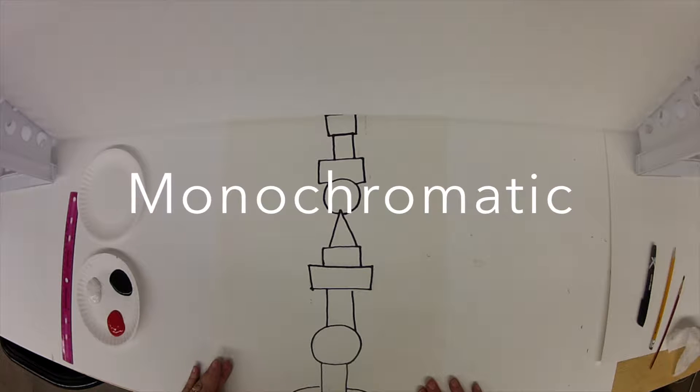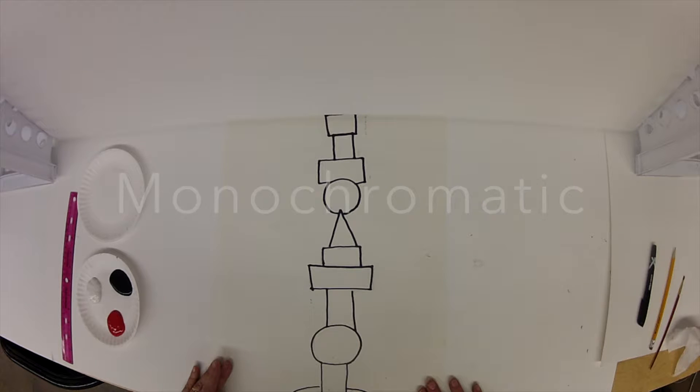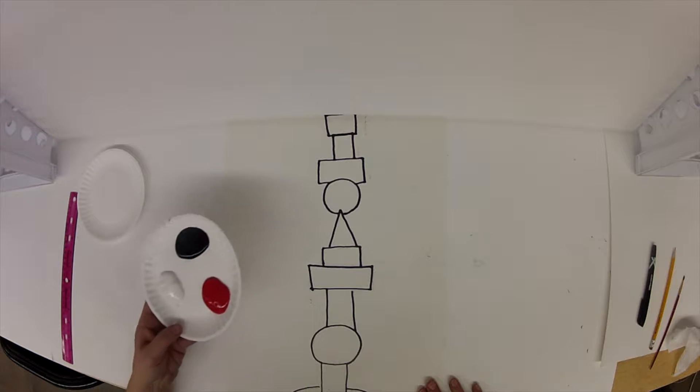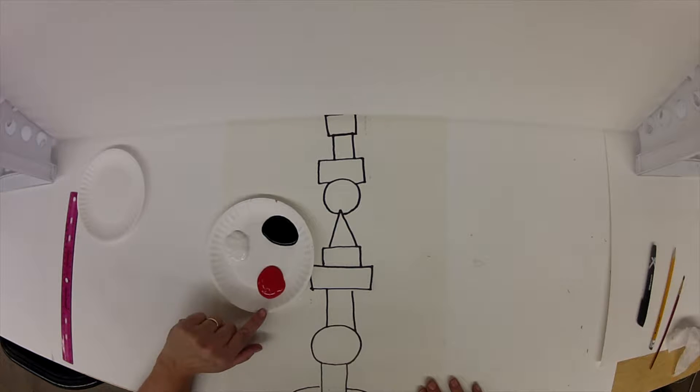Monochromatic is one color plus tints and shades. You are going to go to the supply table and pick up a palette of one color. In this case,